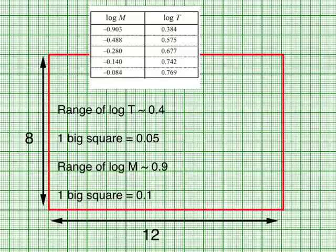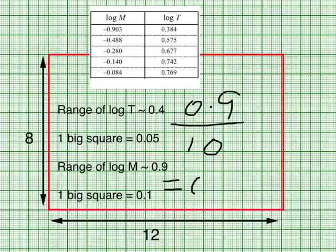Some of you may wonder, why don't I use 10 big squares for the range of log m? Isn't it a bigger scale? And it will give me a bigger graph? Well, if I were to use 10 big squares for the range of 0.9, then for 1 big square, I am going to get a value of 0.09.